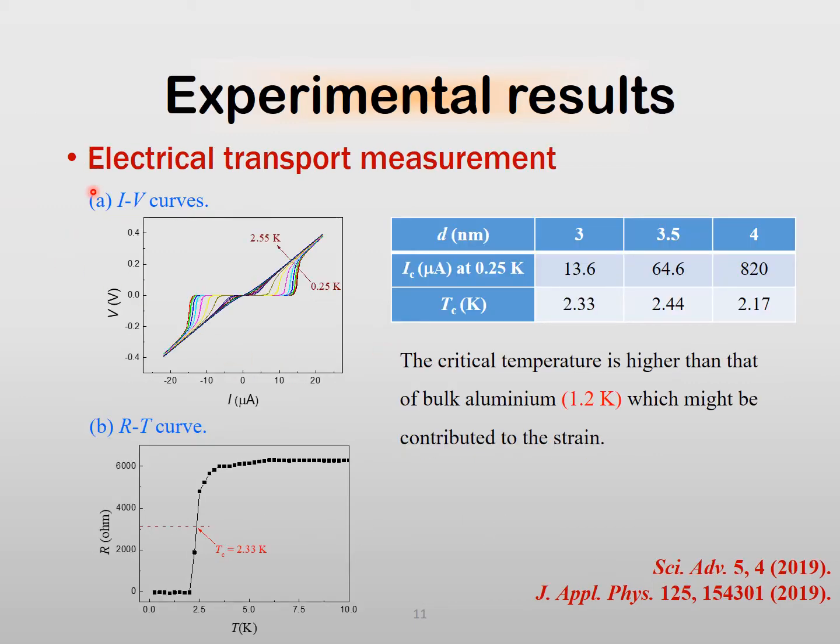We now turn our attention to the experimental results. Let's concentrate on the data taken on the 3 nanometer thick aluminum film. If time permits, I could show you results on the 3.5 nanometer and 4 nanometer thick devices. We did extensive current-voltage measurement at different temperatures. At 2 Kelvin, there still exists a small supercurrent. At 0.25 Kelvin, the critical current increases with increasing film thickness.